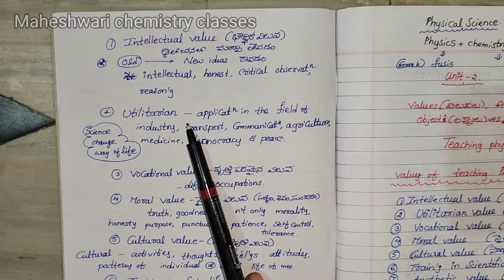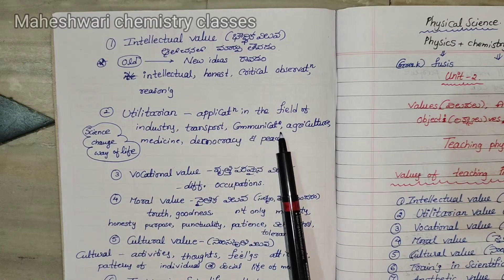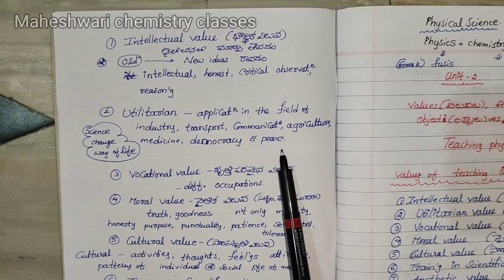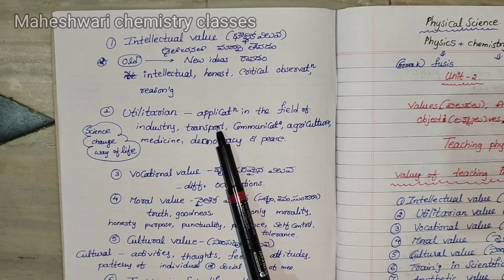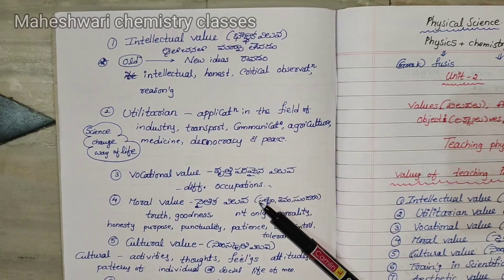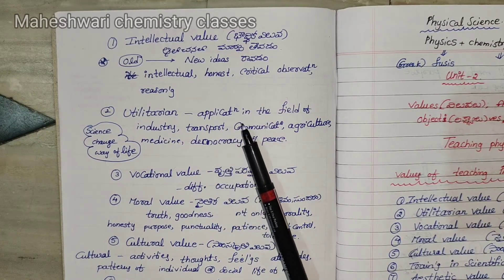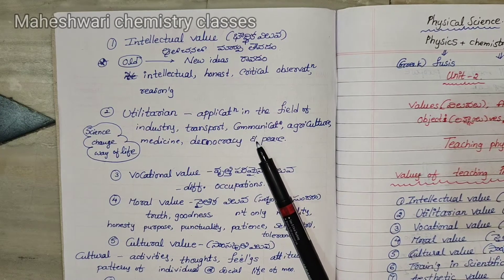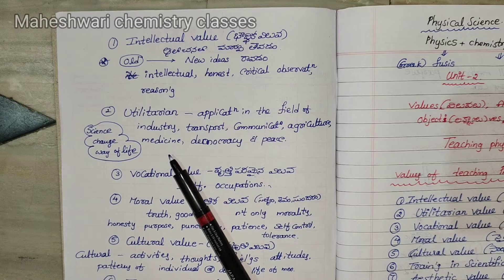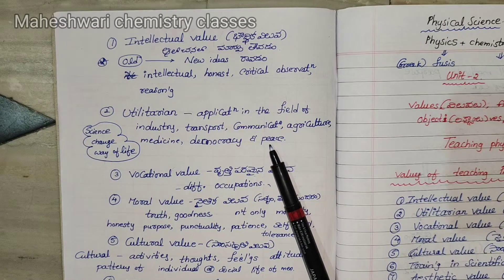Utilitarian value involves application in the field of industry, transport, communication, agriculture, medicine, democracy and peace. Utilitarian value is about the industry purpose, law purpose, communication, science, medicine purpose, democracy and peace purpose — all relating to physical science.